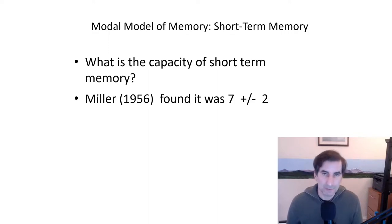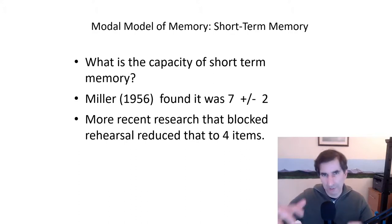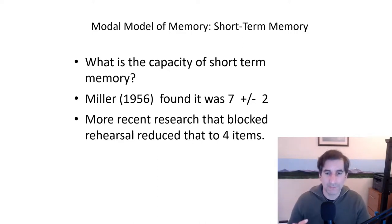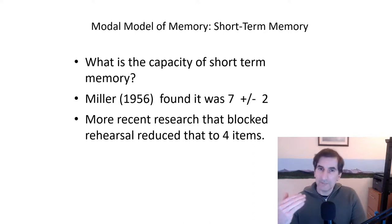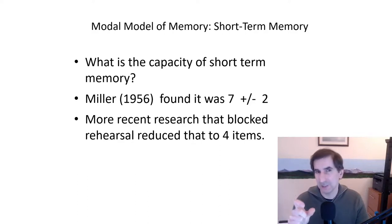A seminal paper by Miller found that the capacity of short-term memory — which lasts less than 30 seconds, usually less than 20 — is about 7 plus or minus 2. That explains why we can remember telephone numbers of length 7 but have difficulty with numbers of length 11 or 12. In research since Miller, when you block rehearsal, short-term memory capacity may actually be about 4 items.